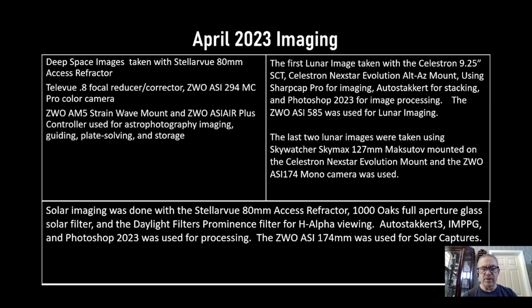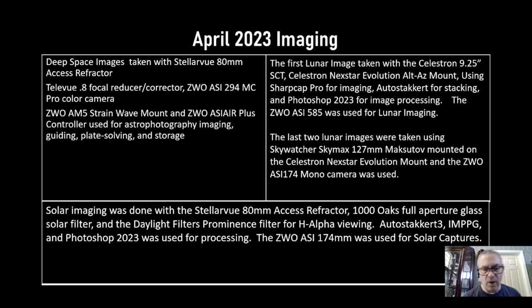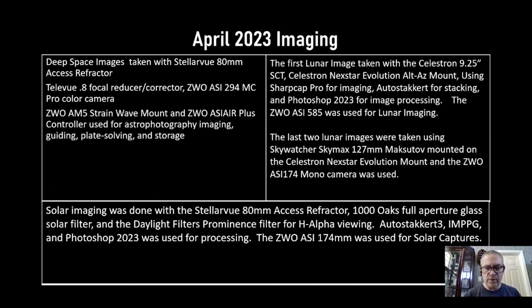For solar imaging, the same telescope was used. A Thousand Oaks full-aperture glass solar filter was mounted on the front of the telescope, blocking enough light and energy to see sunspots. For H-alpha viewing and imaging of the Sun, the Daystar Prominence filter eyepiece was used, and then AutoStacker, IMPPG, and Photoshop 2023 were used in processing. The camera for solar imaging was the ASI 174 mono camera.